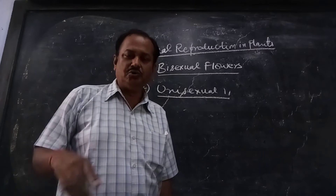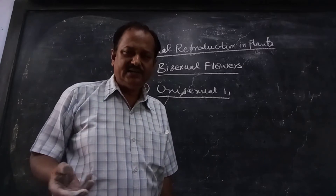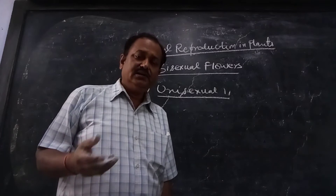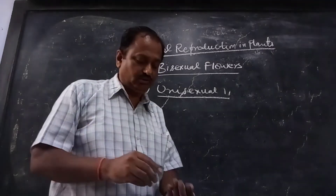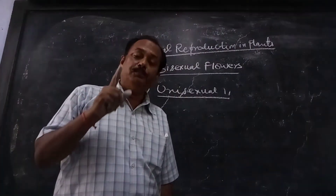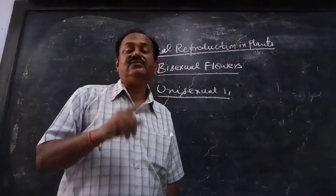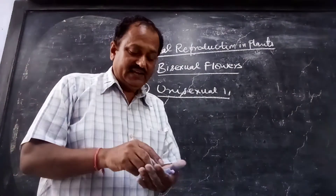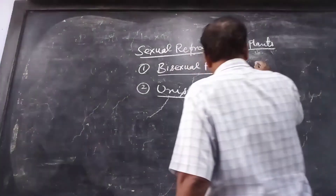Examples of bisexual plants include rose, ladyfinger, brinjal, and chilli. Most of the plants are bisexual — they have both male and female organs present in the same flower.